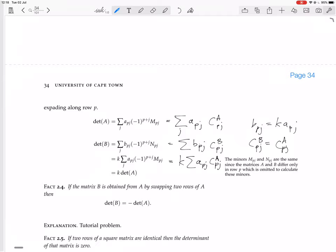That's because B_ij equals A_ij whenever i is not equal to P. Whenever we're not on row P, the matrices are the same. So we have k times that thing.